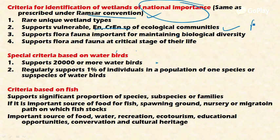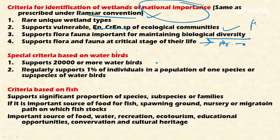The third criterion is that the wetland should support flora and fauna important for maintaining biological diversity. The fourth criterion is that it should support flora and fauna at critical stages of their life — critical stages meaning the breeding stage and the reproductive development of animals or plants. These are the key ecological criteria for designating a wetland as being of national importance.